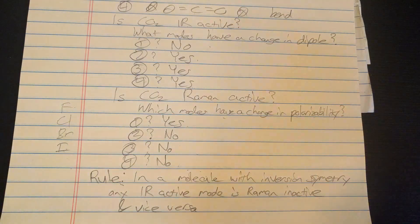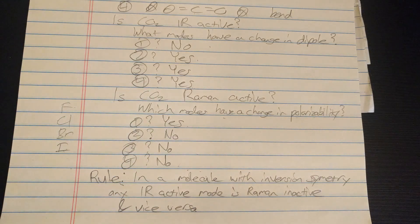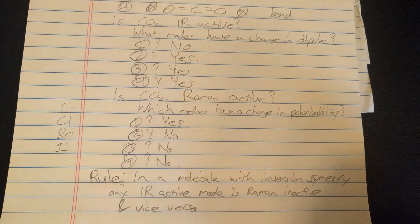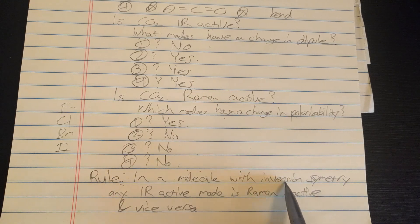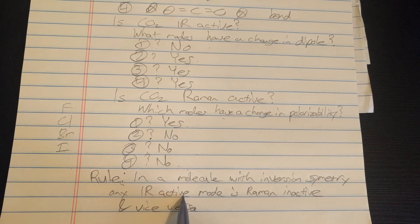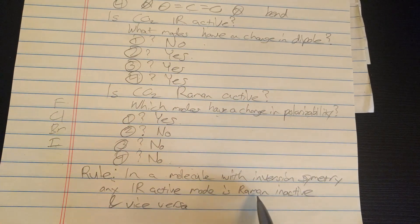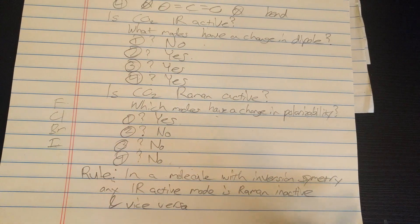So if you take another molecule like benzene, now there's a lot of vibrational modes for benzene. Well you can probably tell immediately benzene has inversion symmetry. So if you find out all the IR active modes for benzene, then you already know the Raman active modes, because benzene has a center of inversion or inversion symmetry.